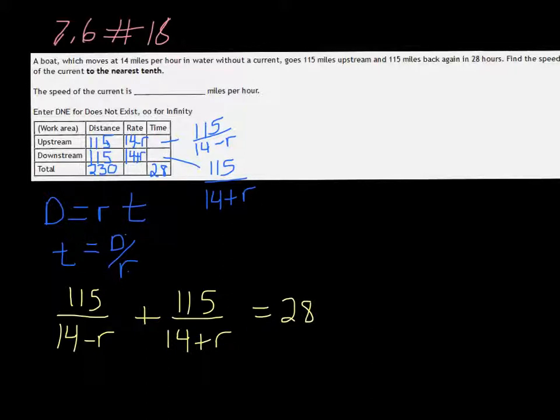In order to solve this, we need to multiply by the LCD. The LCD of this problem is going to be 14 minus r and 14 plus r. For the first part on the left side, the 115 over 14 minus r already has the 14 minus r, so those cancel out, but you need the 14 plus r. So I'm going to have it be 115 times 14 plus r.